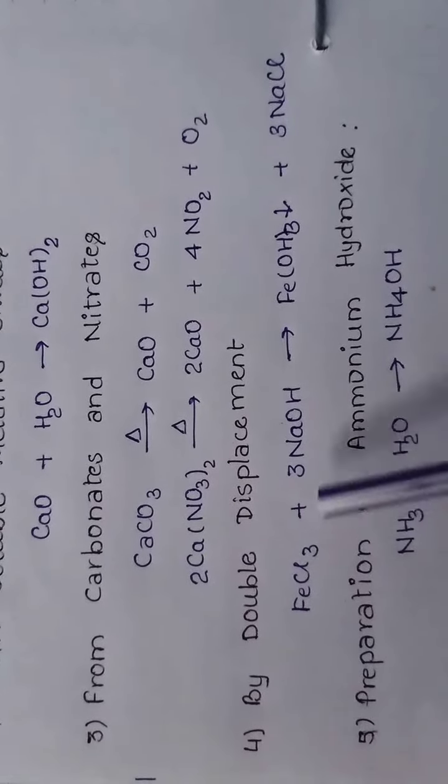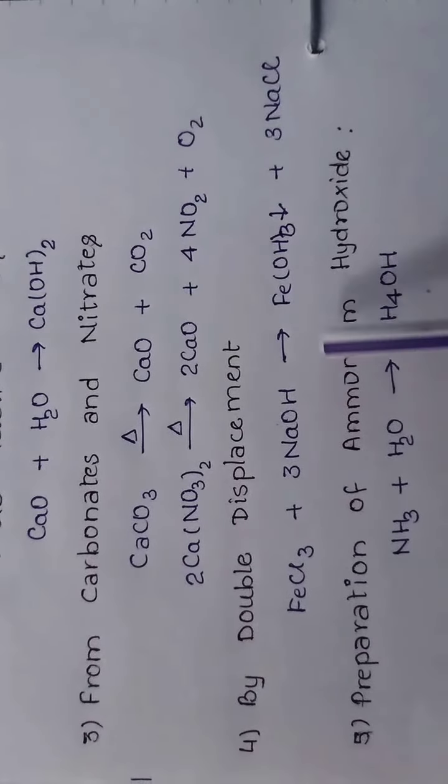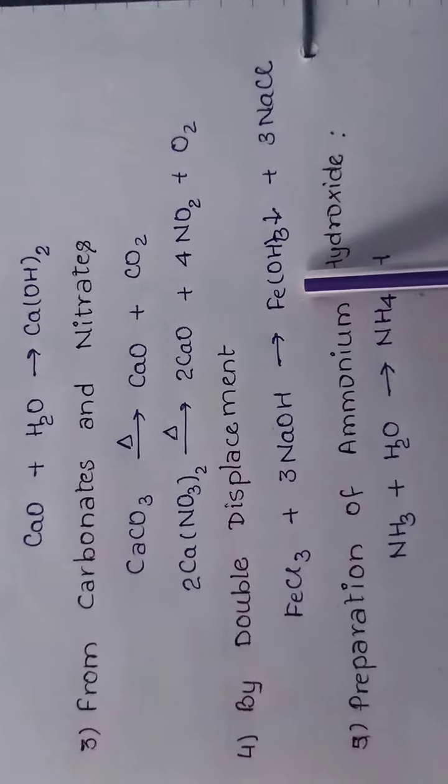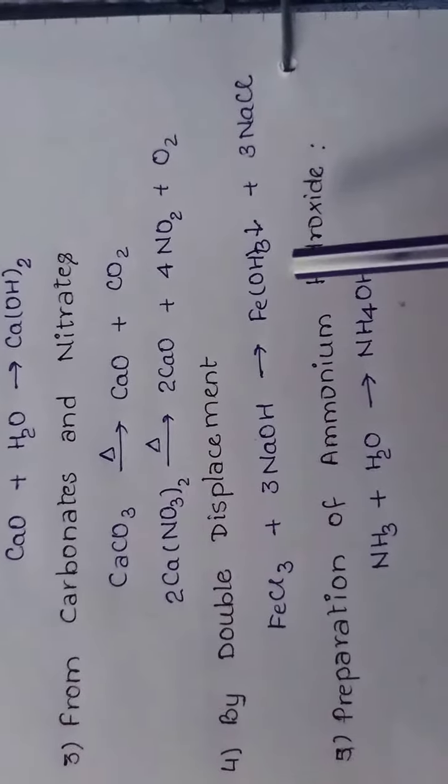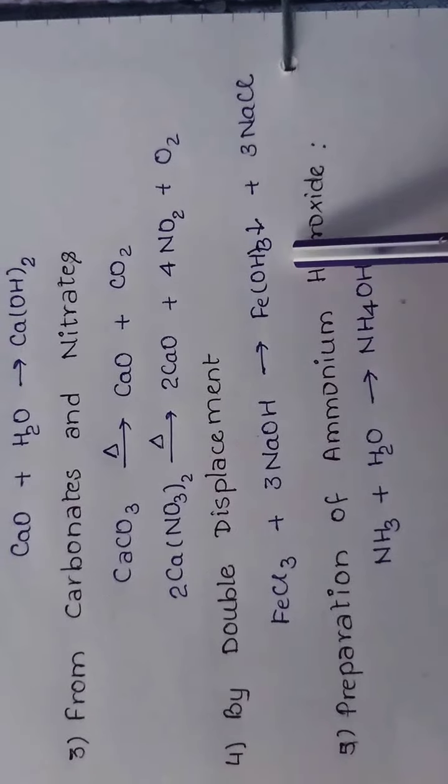When ferric chloride reacts with sodium hydroxide, it gives ferric hydroxide and NaCl. Ferric hydroxide precipitates out.